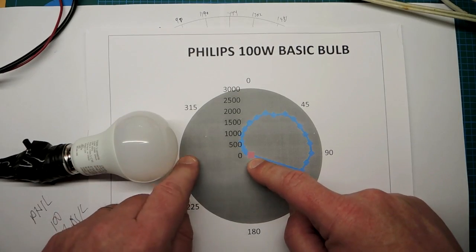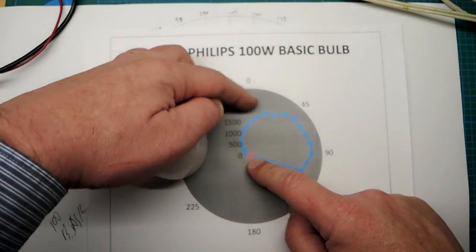As you can see, pointing out this way there's very little light, as you would expect, but unfortunately on the sides there's actually not a great amount of light.